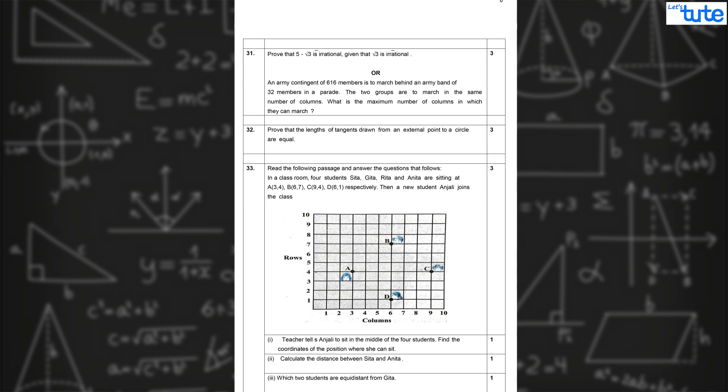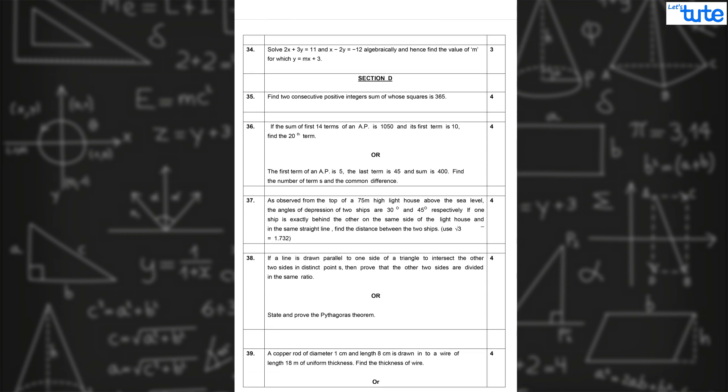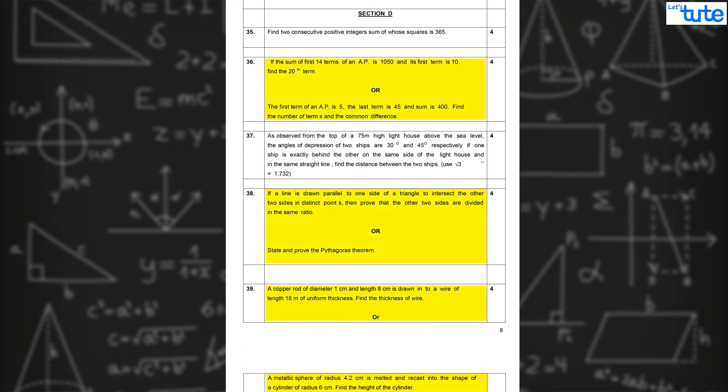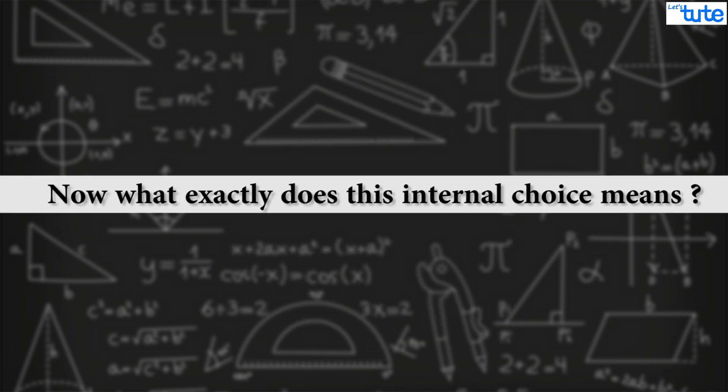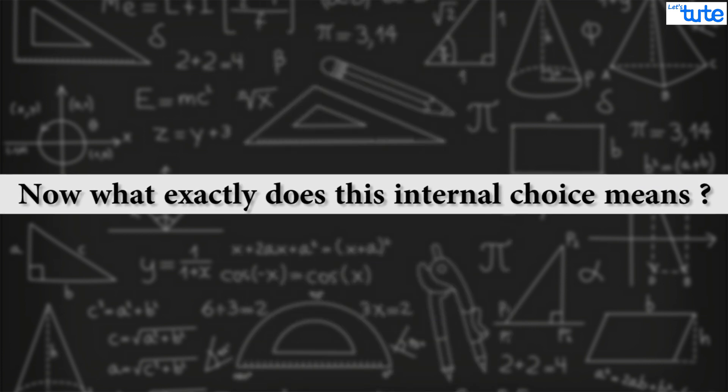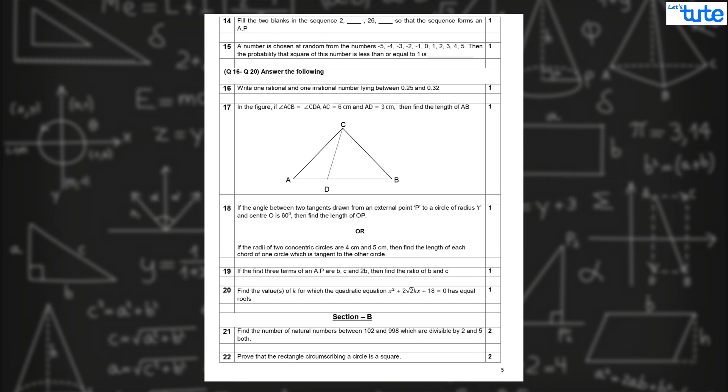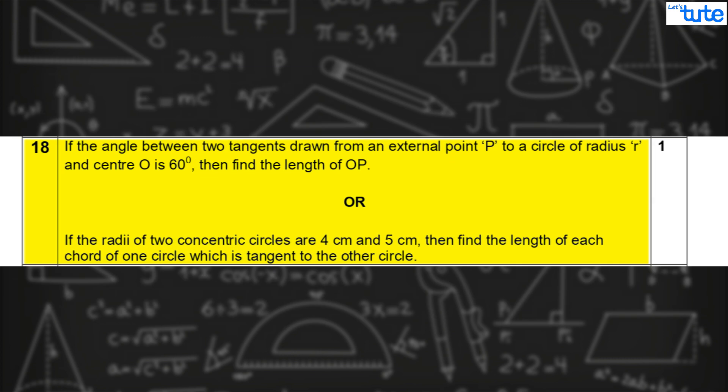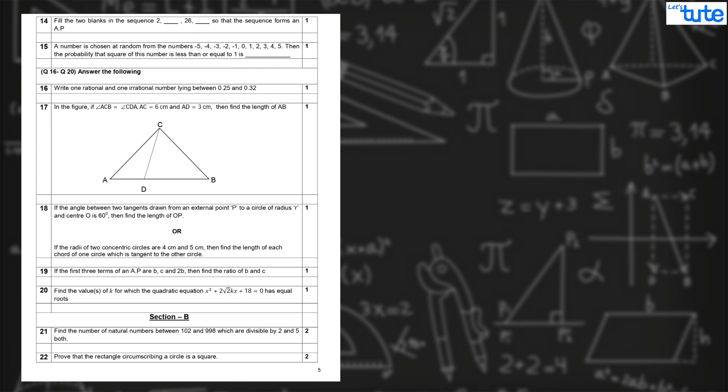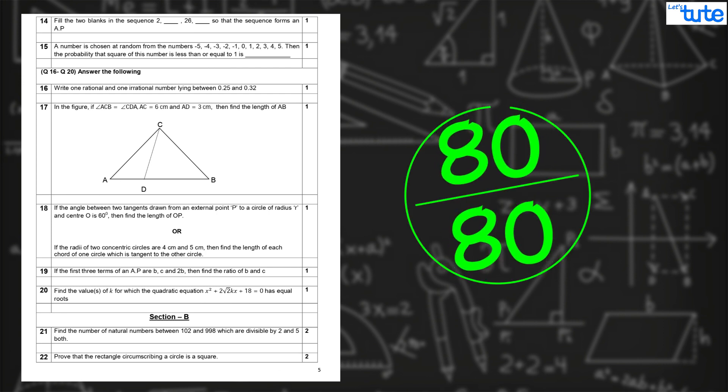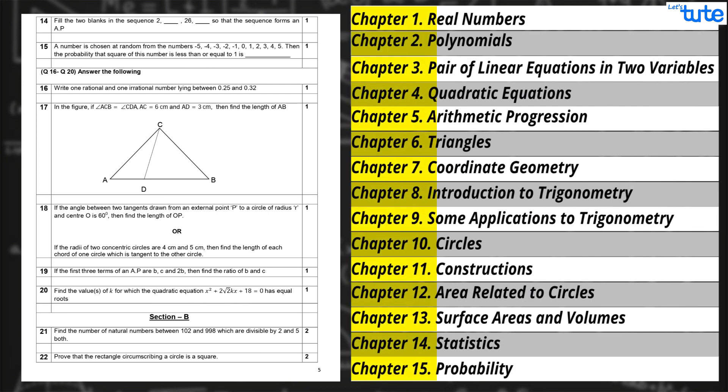And similarly an internal choice will be provided in three questions for section D. Now what exactly does this internal choice mean? Suppose there is this question, we can see that this question is based on circles. Now for this question there will be an option for circle chapter only. So the question will be from the same chapter. Due to this pattern if a student wants to score full marks they cannot leave any chapter.